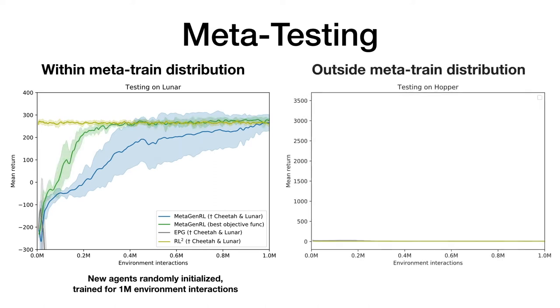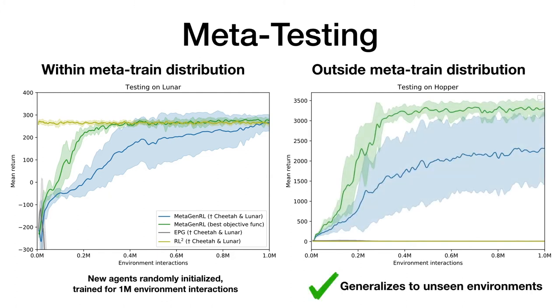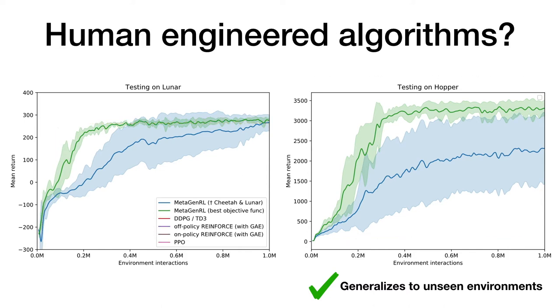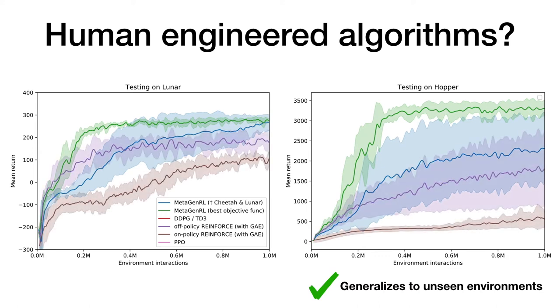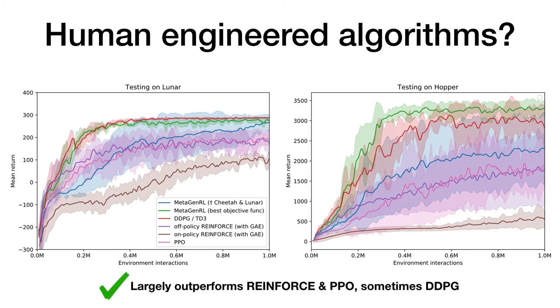When testing the baseline RL-squared on Hopper, a significantly different environment, it appears to have overfit to the training distribution. In contrast, our meta-learned objective function generalizes, and allows learning even in the significantly different environment. Not only does meta-general generalize better than previous meta-learning algorithms, it even largely outperforms human-engineered ones such as on-policy-reinforce, off-policy-reinforce, and PPO. On cellular environments, the meta-learned algorithm is even competitive to GPG. More experiments such as ablations, additional environments, and an analysis of the learning behavior can be found in the paper.